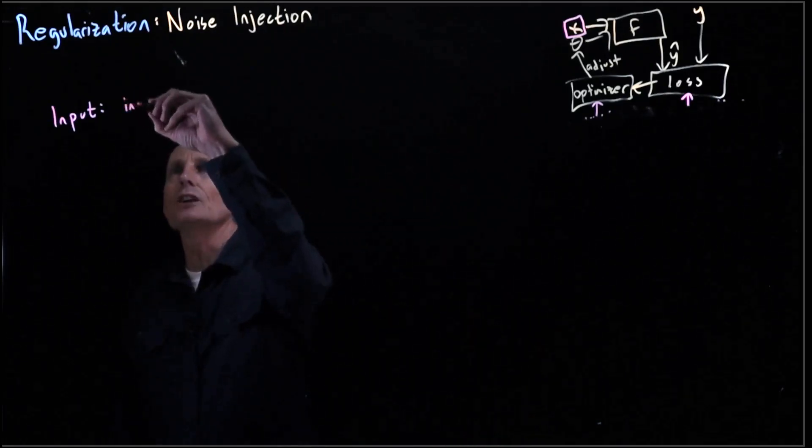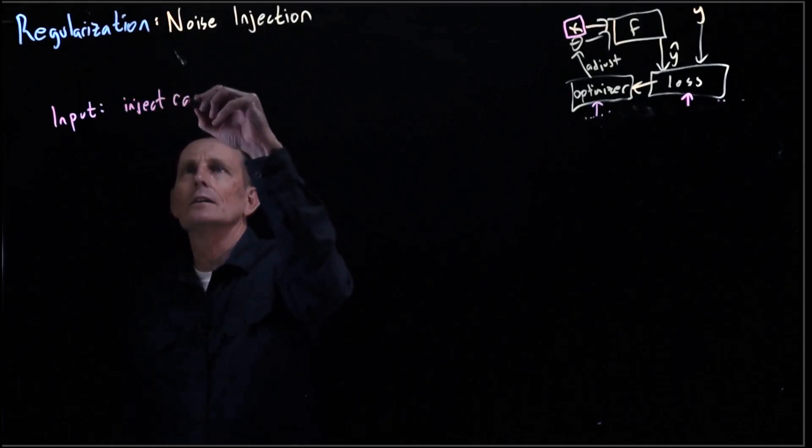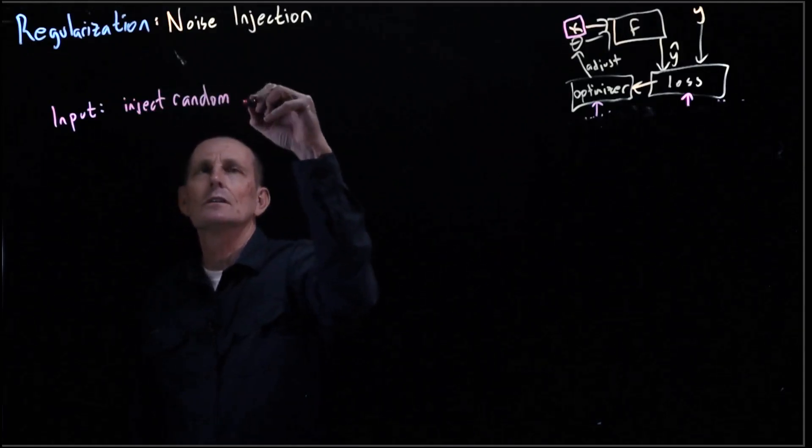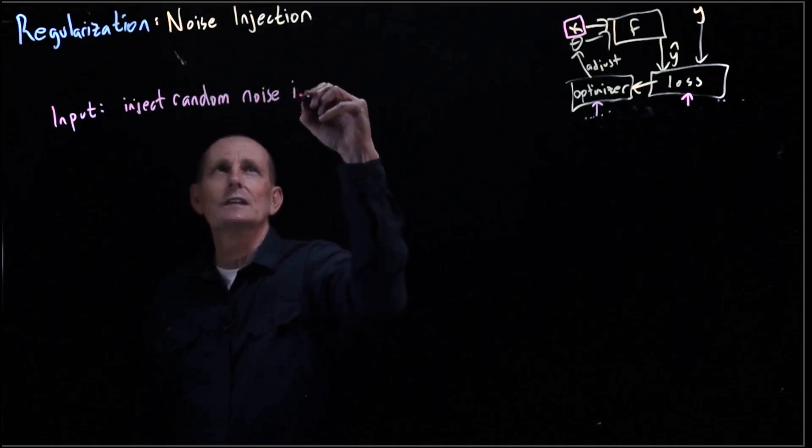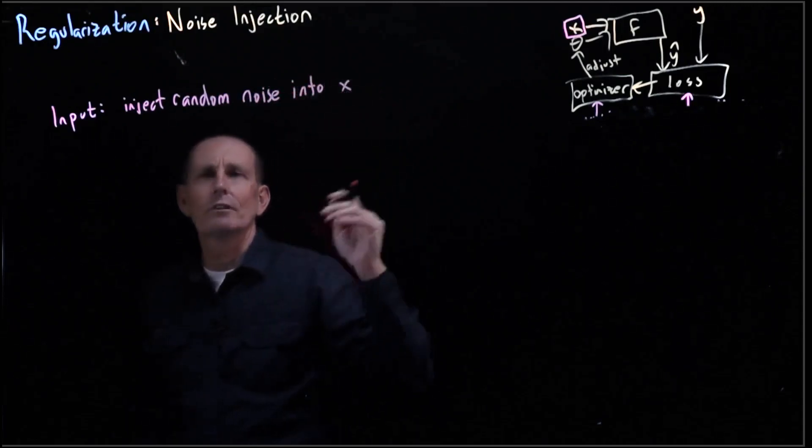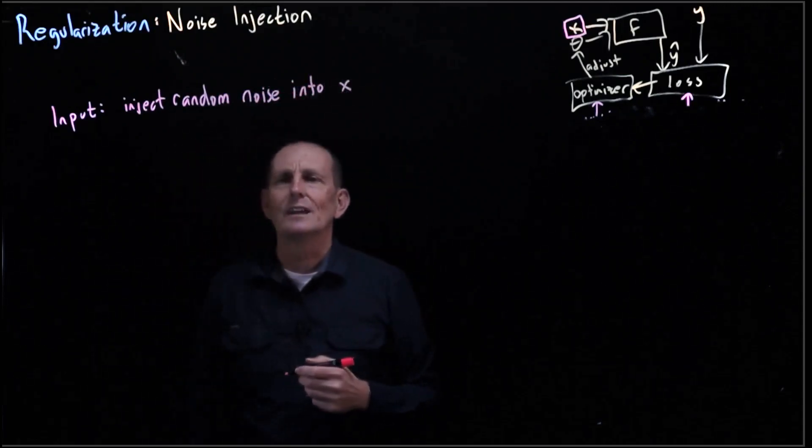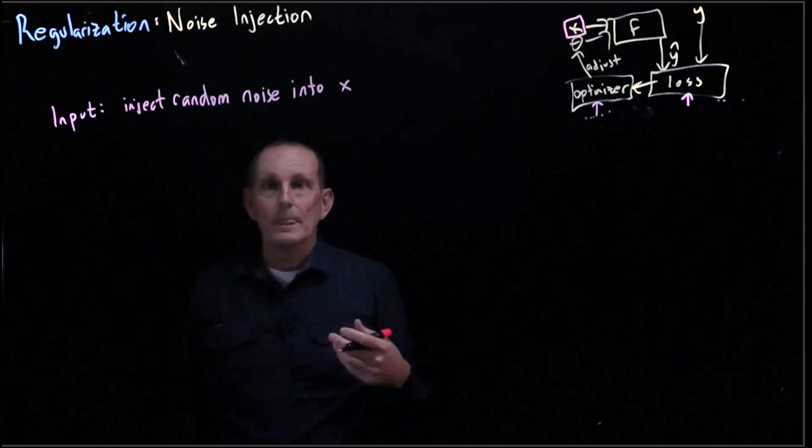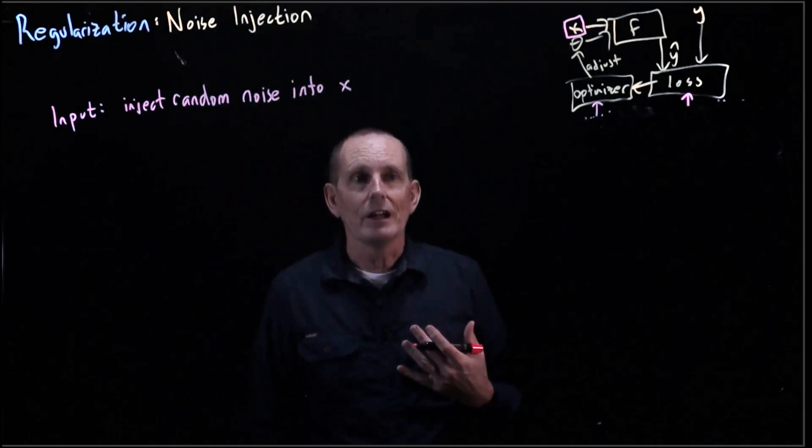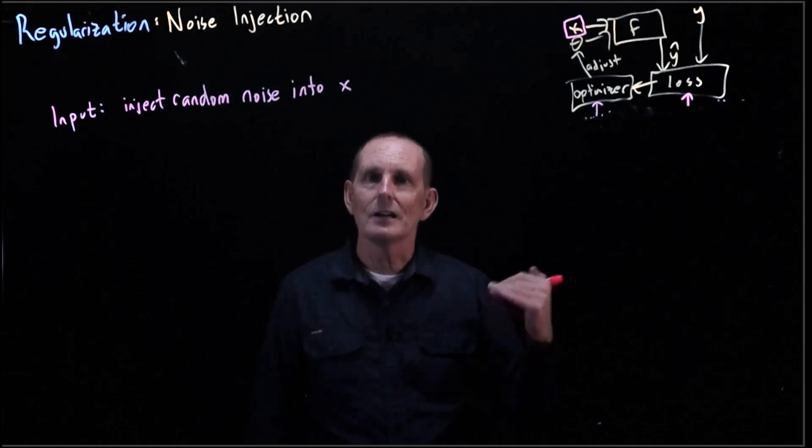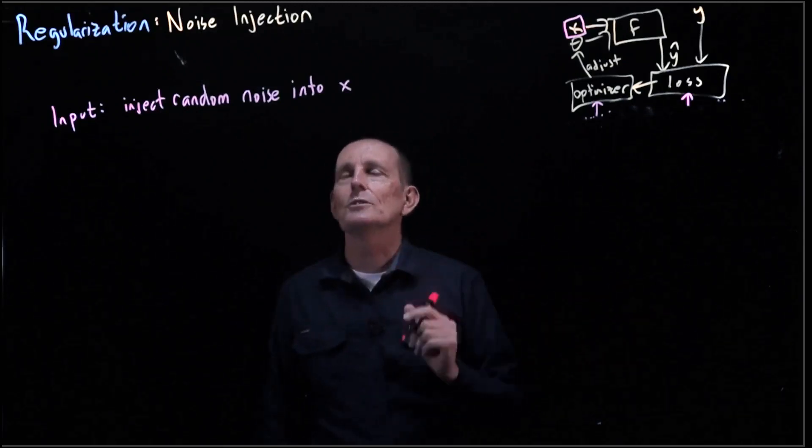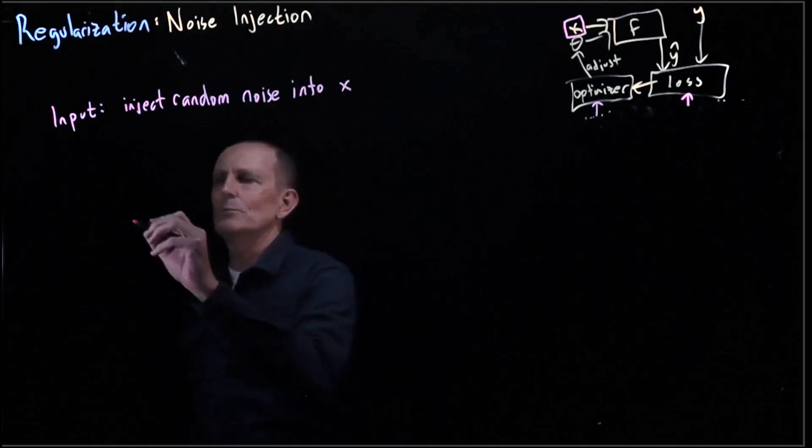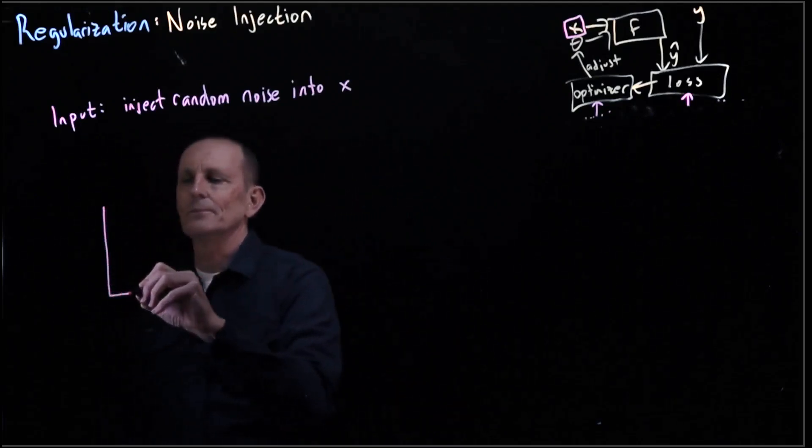We can inject random noise into x for every x in our training set. We don't want to do this while we are calculating our validation loss and we don't want to do it when we're actually at inference time out in the field, but we do want to do it during training. So let me pictorially show you what I mean.